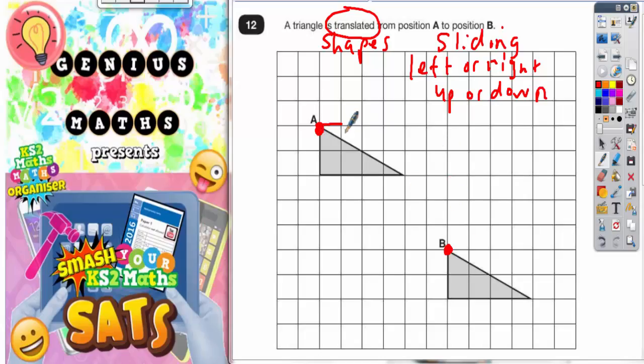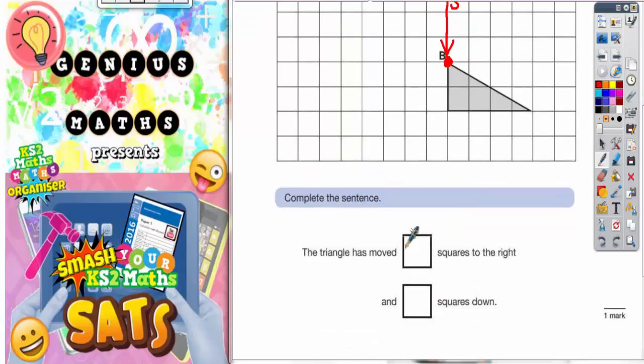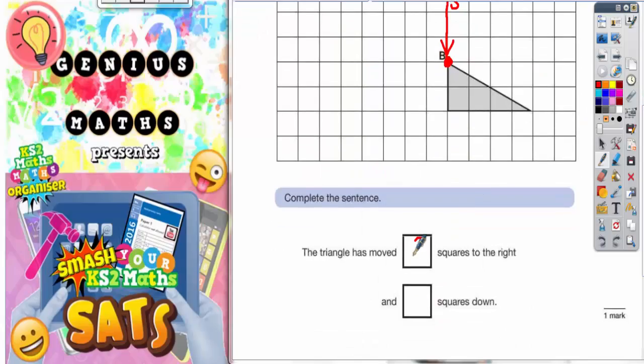So let's just count the number of squares on the grid. So we're going to go 1, 2, 3, 4, 5, 6 squares to the right. And then 1, 2, 3, 4, 5 squares down. So it looks like it's 6 to the right and 5 down. And that is all you need to put in the squares. So 6 squares to the right and 5 squares down.